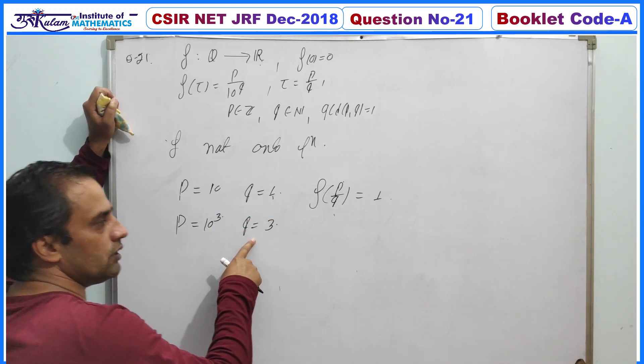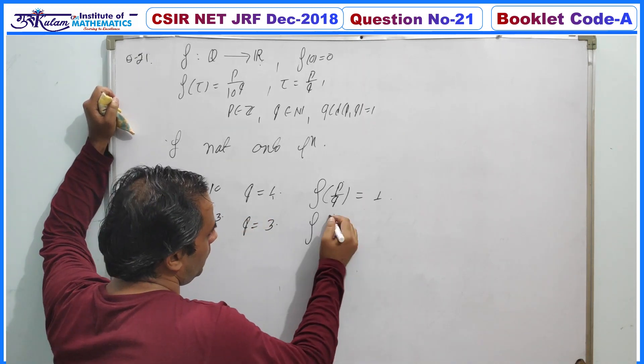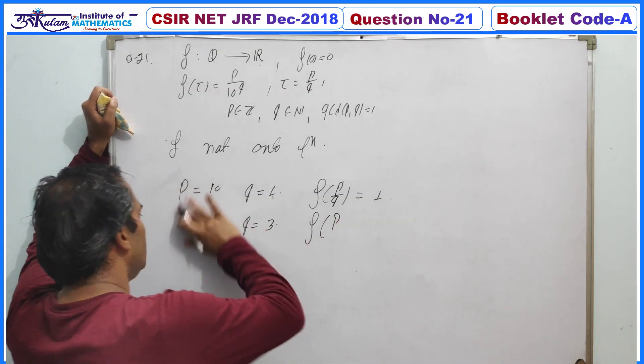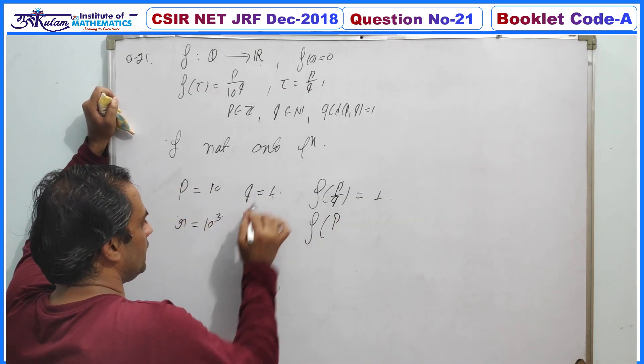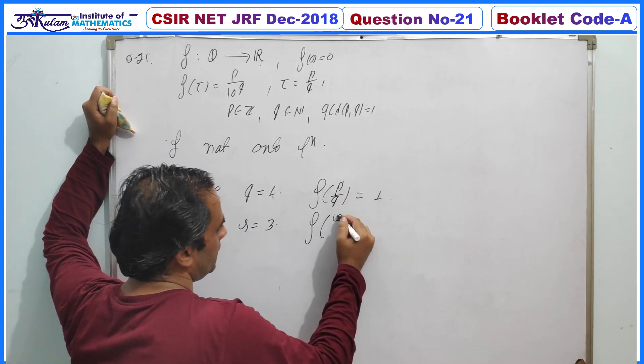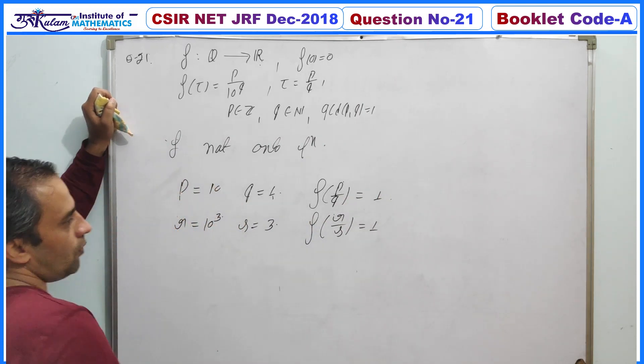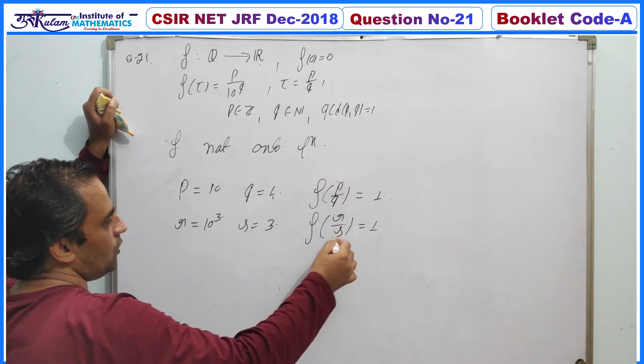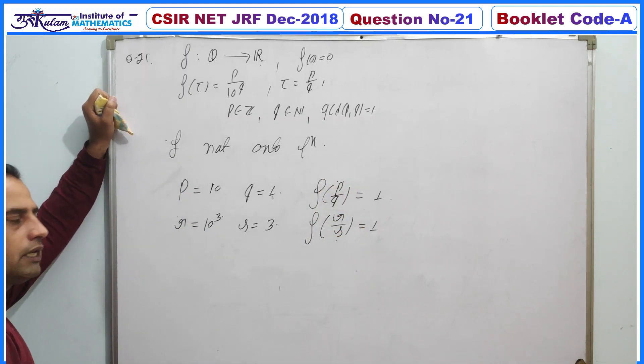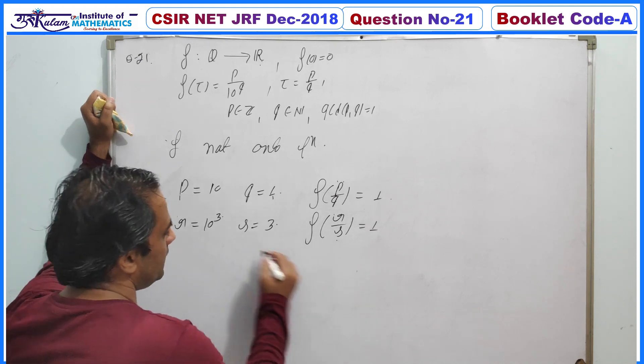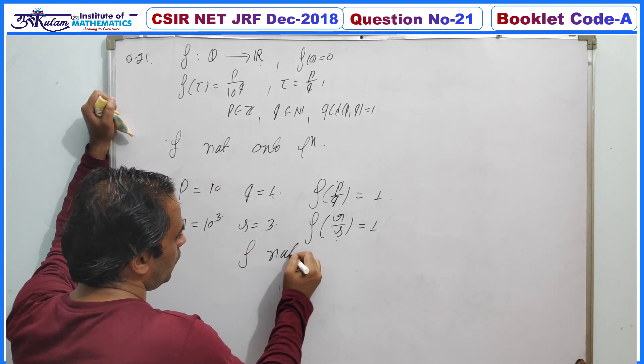Again gcd of p and q is 1, and f of p by q is... or say this is r and this value is s. So image of r by s is again 1. Now p by q and r by s are two different numbers but images are same, which implies this f is not one-one.